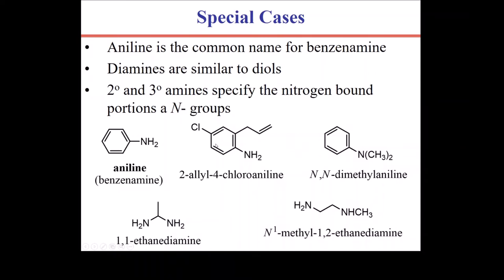Amines can be much more complicated than alcohols because nitrogen can make up to three bonds. In an alcohol, oxygen makes two bonds and one must be to a hydrogen. In a nitrogen, none of the bonds have to be to hydrogens — it's still called an amine. A primary amine has nitrogen connected to one non-hydrogen group. A tertiary amine has nitrogen connected to three non-hydrogen groups. A secondary amine has one hydrogen and two carbon substituents.